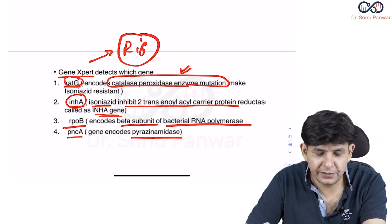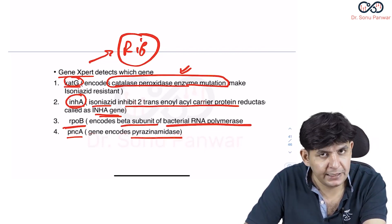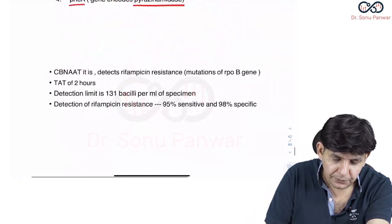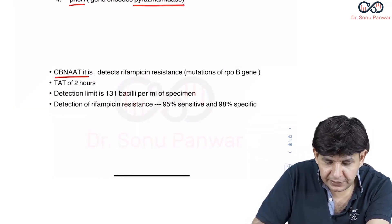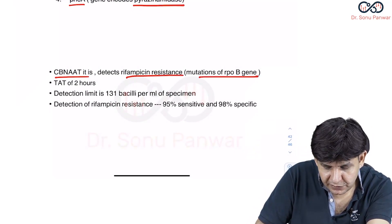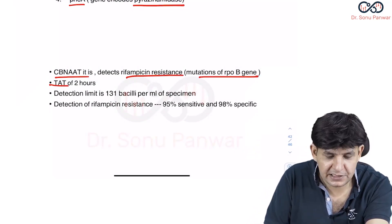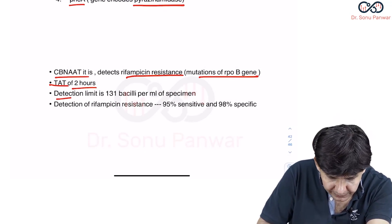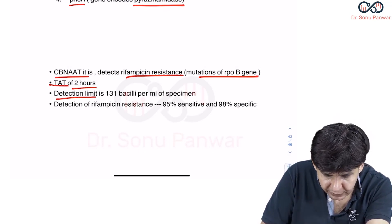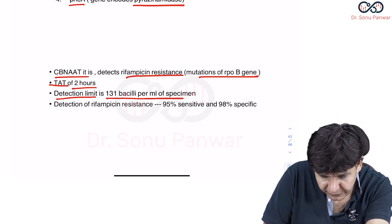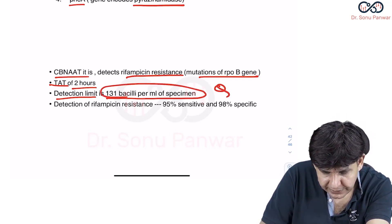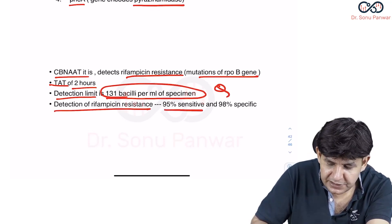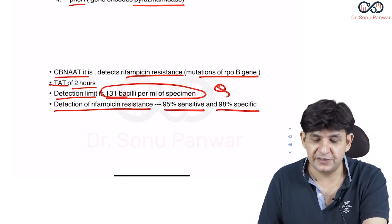In Gene Expert RIF, the target is mainly the RPOB gene. The other name is CBNAAT, and it detects rifampicin resistance. The turnaround time (TAT) is 2 hours — you can have the diagnosis in 2 hours. The detection limit is 131 bacilli per ml of specimen. Detection of rifampicin resistance is 95% sensitive and 98% specific.